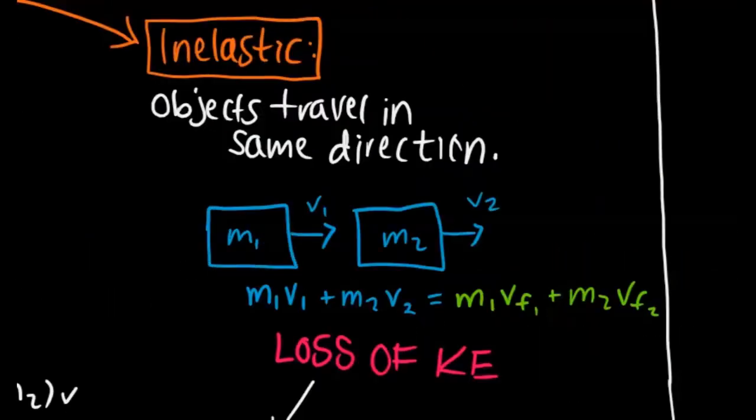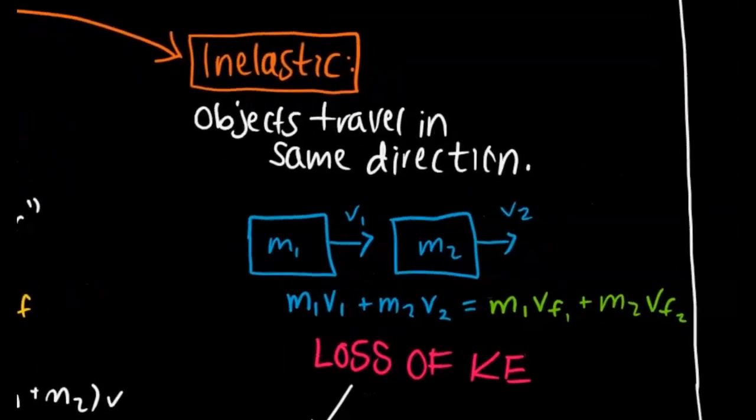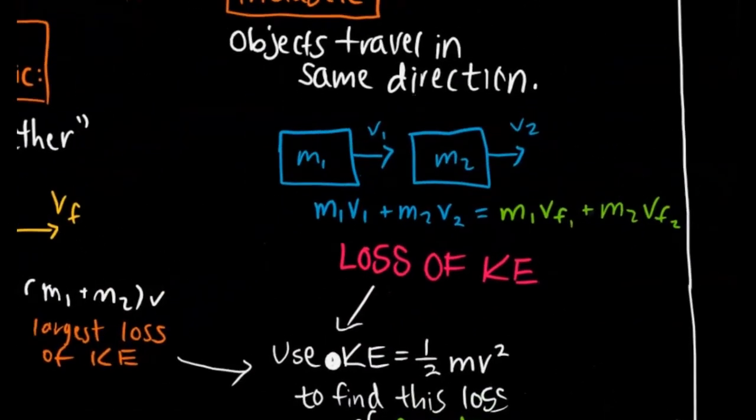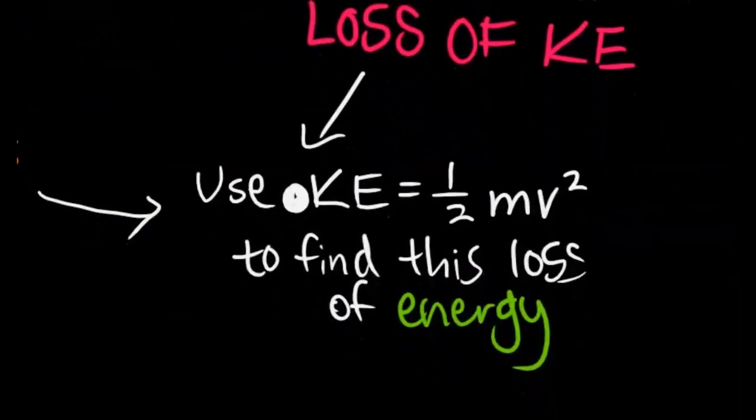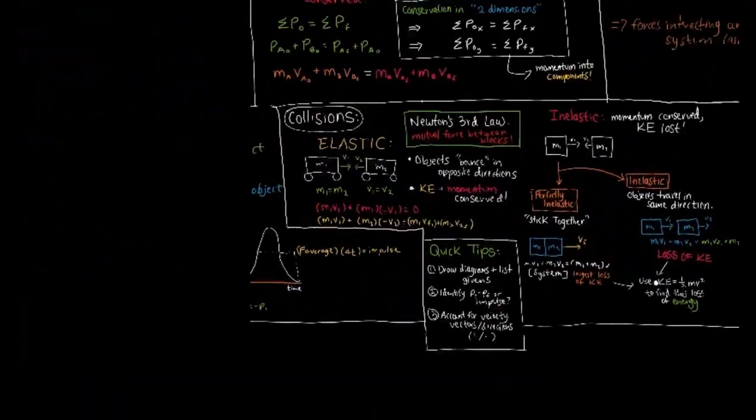V represents the final velocity which both blocks have because they're moving as one object, as one unit in the system. They can also just be inelastic, so they generally travel in the same direction. The equation is pretty similar to the elastic equation, except now taking into account those vector directions. That's really what makes the difference in these momentum equations. Whenever you have a loss of kinetic energy, use kinetic energy equals one half mv squared to find the loss of energy.